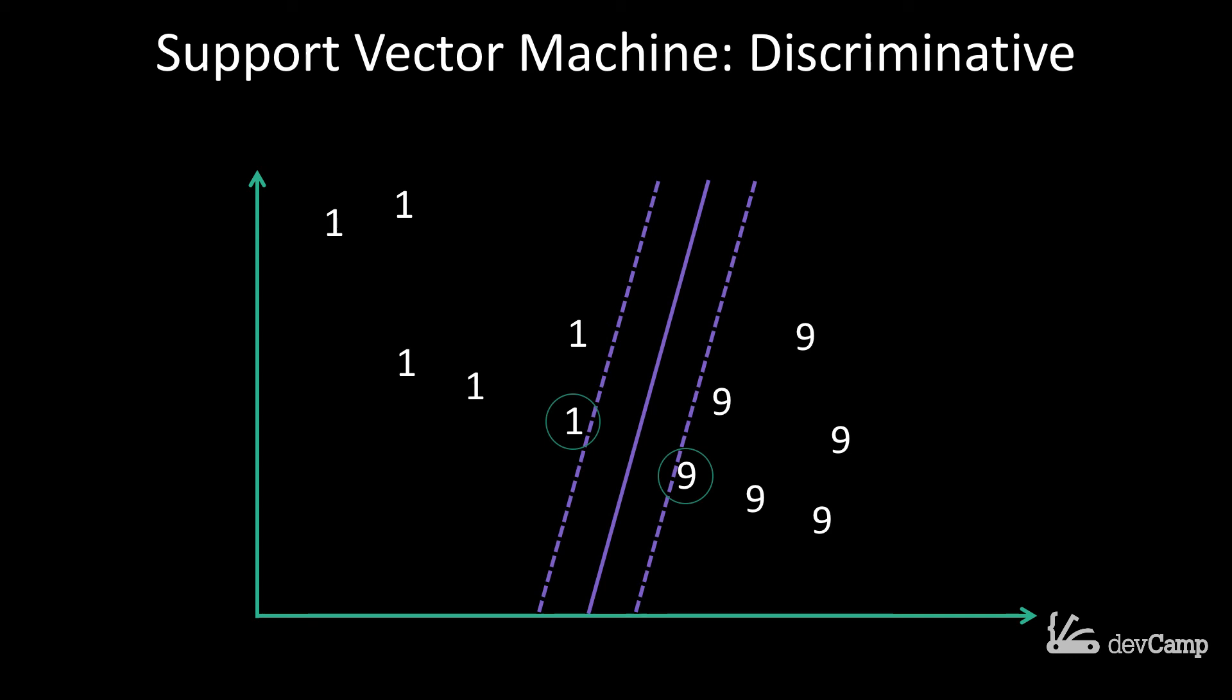Coming back to the handwriting example, if we get a new number that it's trying to recognize, it is not going to look at all of the nines and then all of the ones. It's simply going to look at the components inside of that new element and the boundary that it set up. Depending on the components inside the new element, it's going to say, 'Okay, based on where the pixels are located on the image, it appears that you are a one or a nine.'